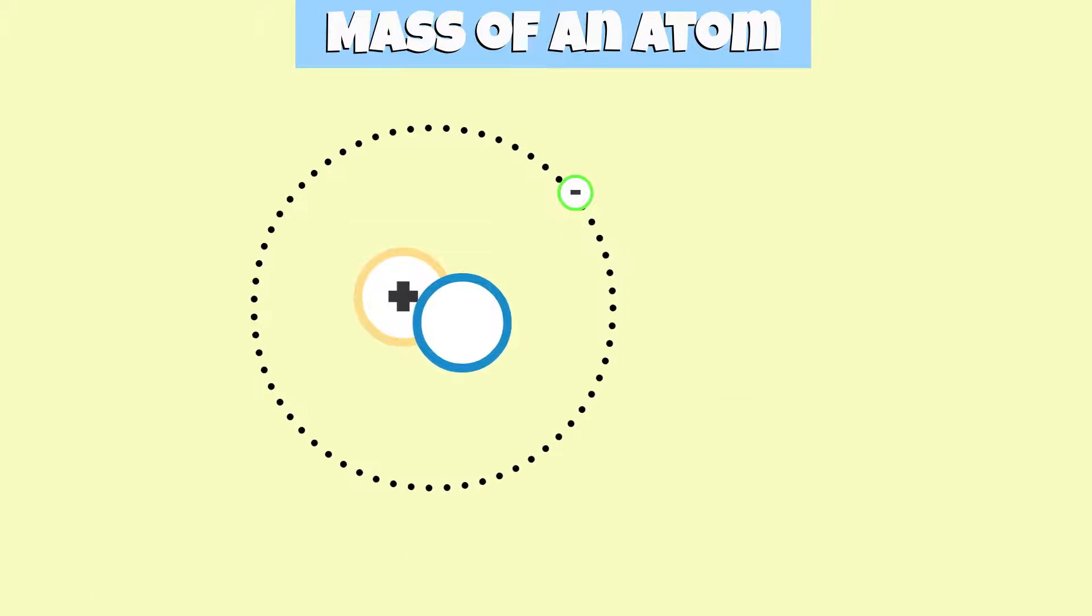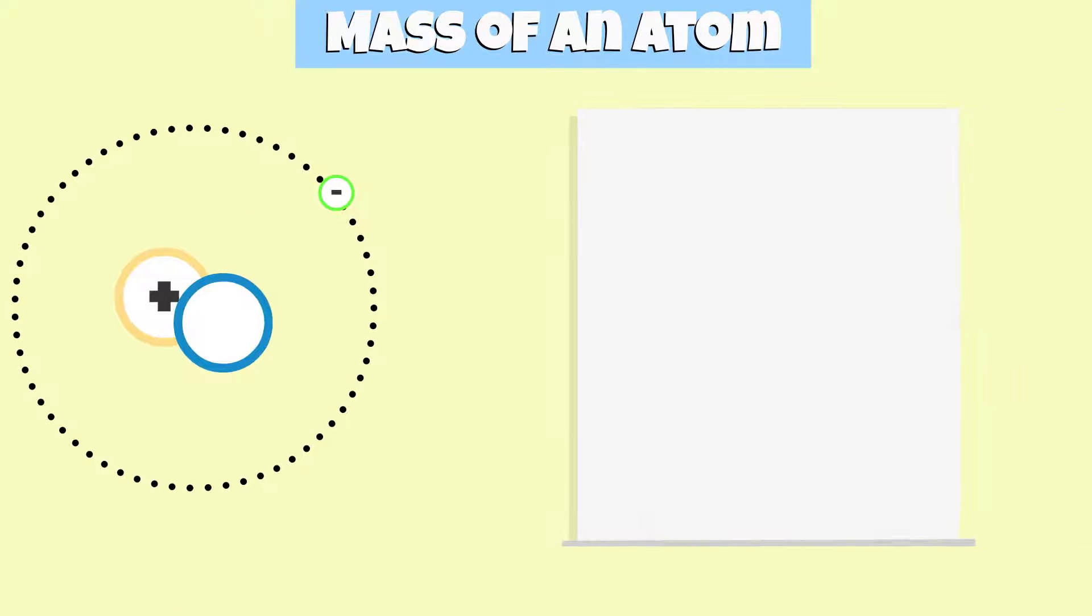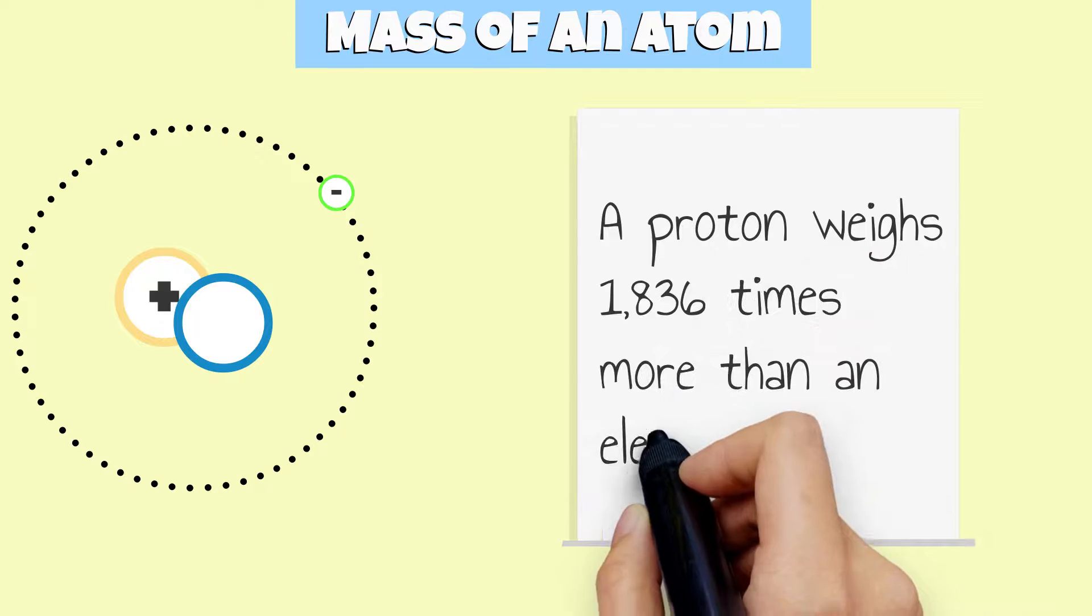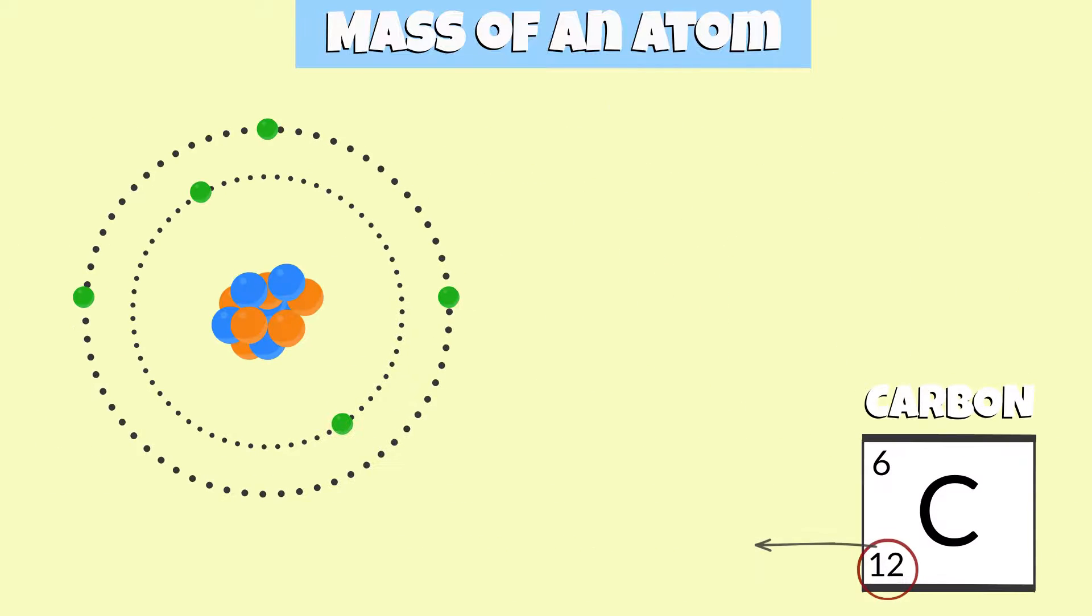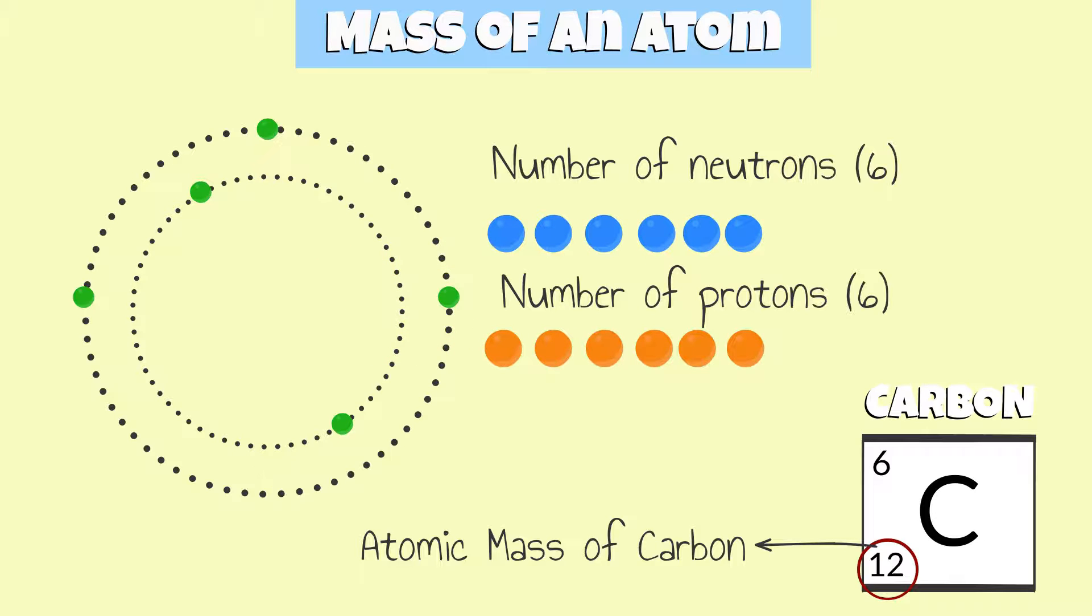The mass of an electron is so insignificant compared to the mass of a proton or a neutron. In comparison, a proton weighs 1,836 times more. That's why the atomic mass of an element is calculated by the number of protons and neutrons in its atom.